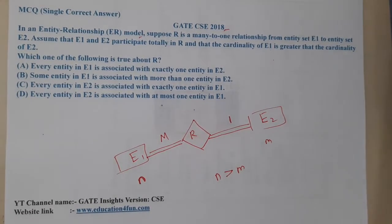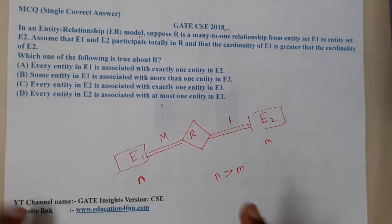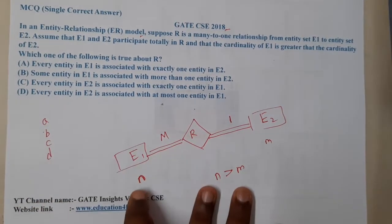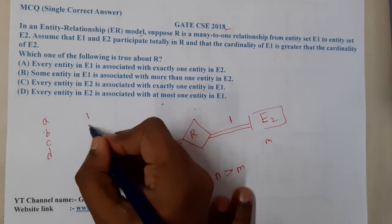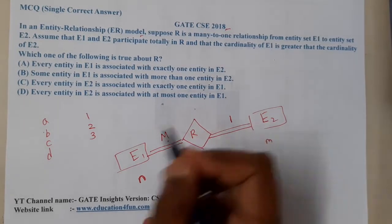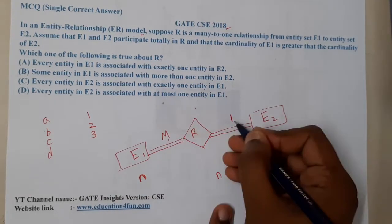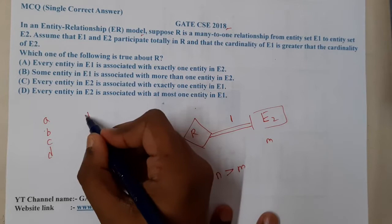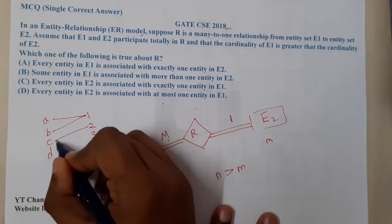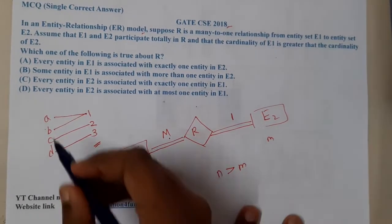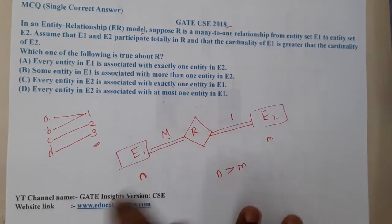They are asking which of the following is true about R. For easy understanding, let us write a small example. In a many-to-one relation, if we have A, B, C, D, E on the E1 side and 1, 2, 3 on the E2 side, then in a many-to-one mapping, multiple entities from E1 map to one entity in E2.